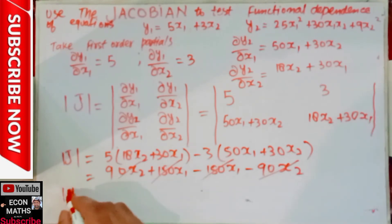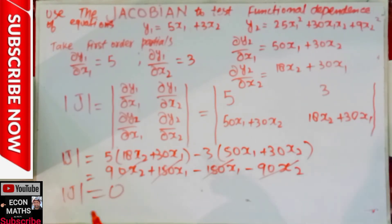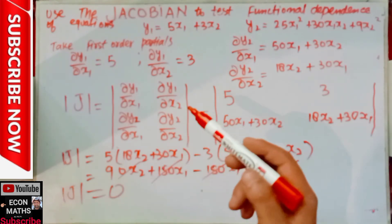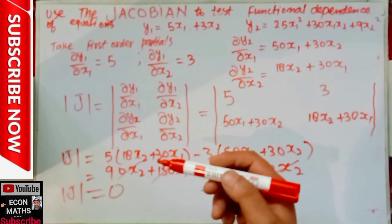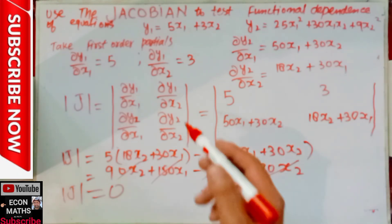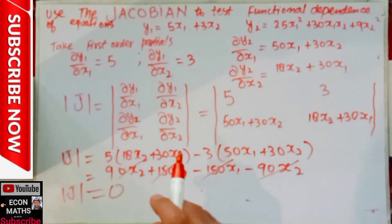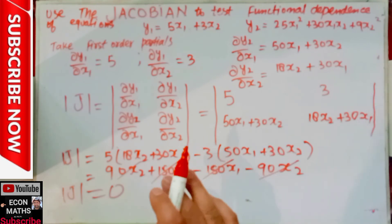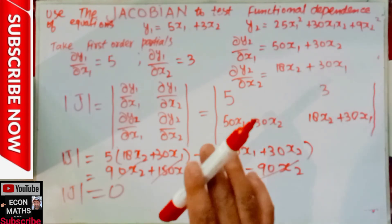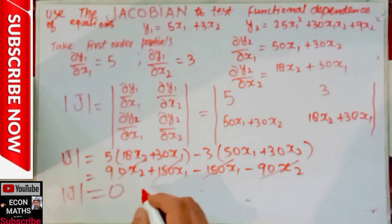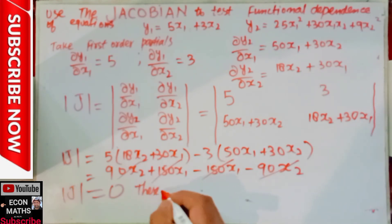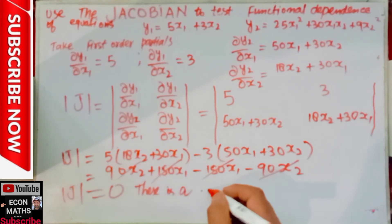So our J is equal to 0. As we have seen, when the Jacobian determinant is 0, we say the equations are functionally dependent — that is, there is a functional dependence between the equations.